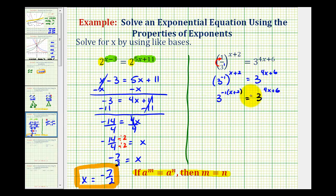Finally, we have the left side and right side with a common base, which is 3. Since they're equal, the exponents must also be equal. So negative 1 times the quantity x plus 2 must equal 4x plus 6.